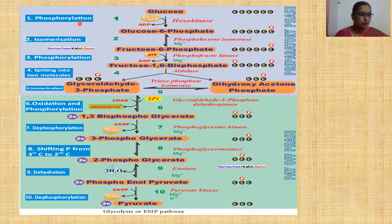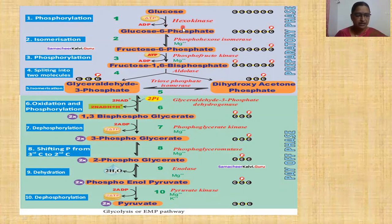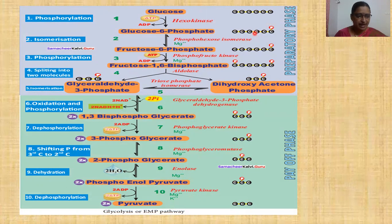Glycolysis is divided into two phases: the preparatory phase and the payoff phase. In the preparatory phase, glucose with 6 carbon atoms undergoes phosphorylation with the help of ATP, in the presence of hexokinase enzyme and Mg++ as a cofactor. In this reaction, one phosphate group from ATP is removed to produce glucose-6-phosphate, where the third phosphate group of ATP gets attached to the 6-carbon of glucose.